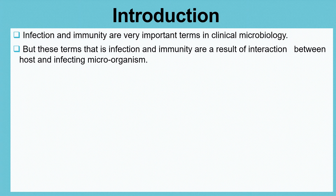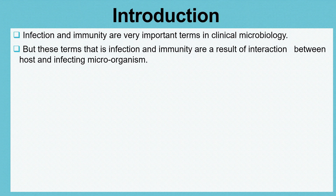In this topic, we are going to study about infection. Infection and immunity are a result of interaction between a host and infecting microorganism. When there is an interaction between a host and infecting microorganisms, these two terms arise. If the immunity of the host lowers down, then only the microorganism can attack the host and cause an infection.